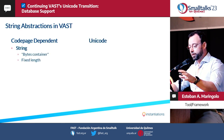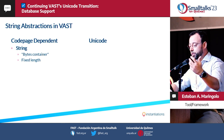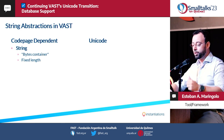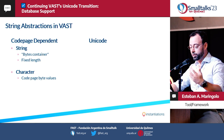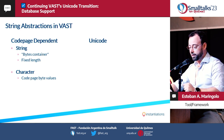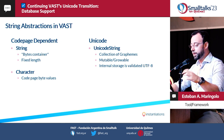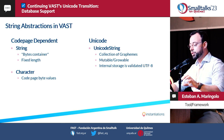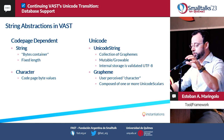I'll show you a comparative table. We have a classical string that works as a bytes container — a character has some value that will be displayed differently depending on whether you have the right or wrong code page configured. The string is composed of characters, and the values are also code page-dependent. On the Unicode side, we have the newly introduced Unicode string class, which is a collection of graphemes — I'll mention what a grapheme is shortly — it's mutable, and its internal storage is always validated UTF-8. Then we have the grapheme, which is the user-perceived character, basically what users see on screen.